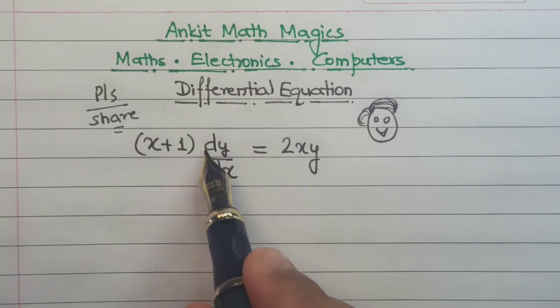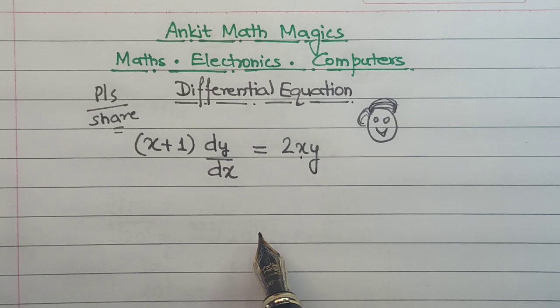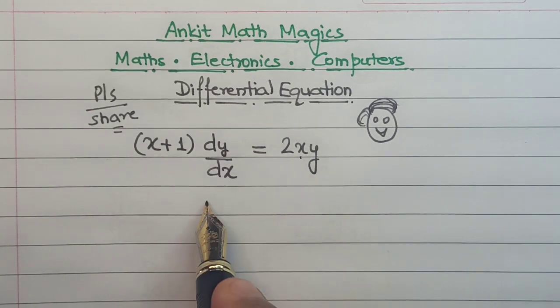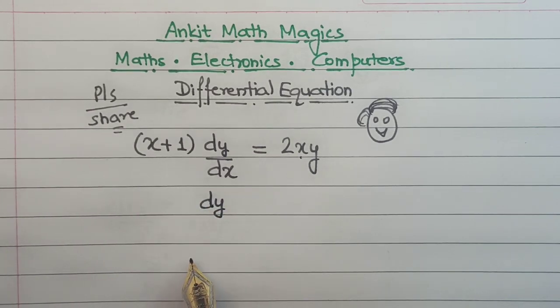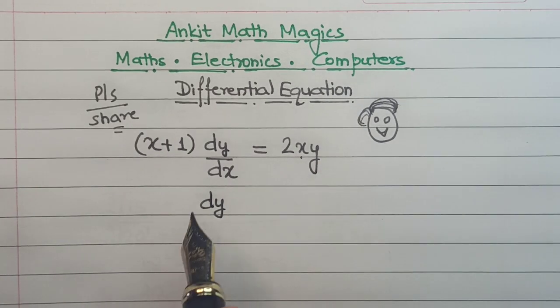On the left hand side I'll be assembling all the y components, and on the right hand side I'll be assembling the x components. So since dy is the y component, this remains as it is.